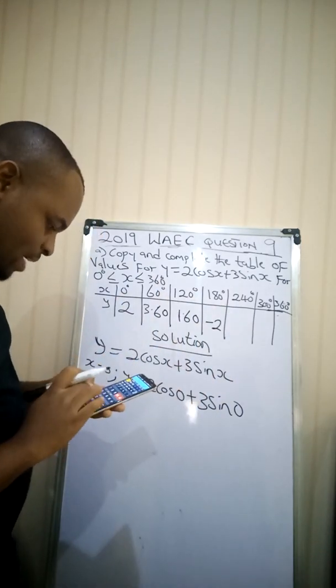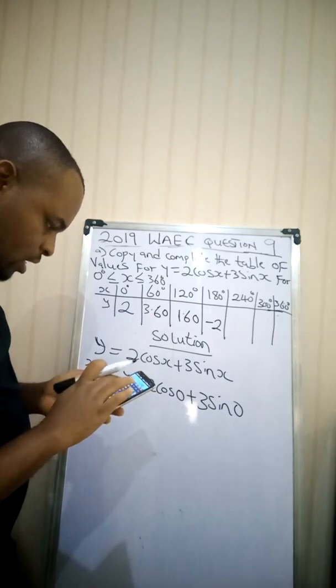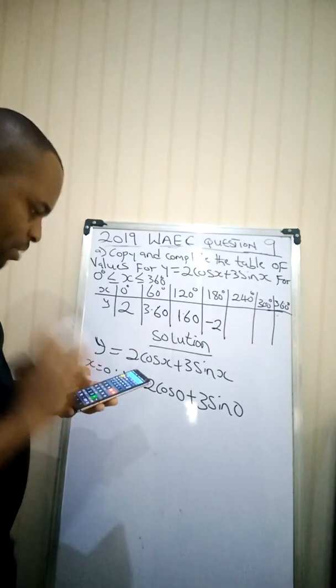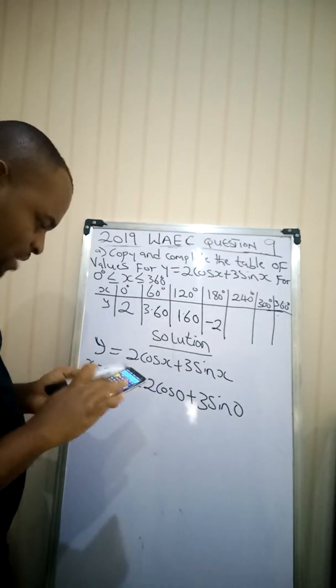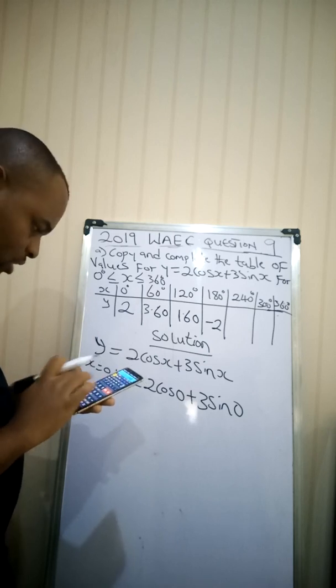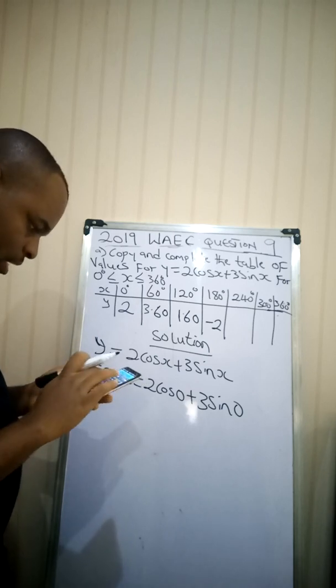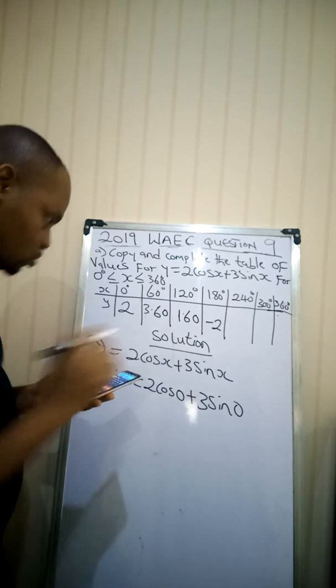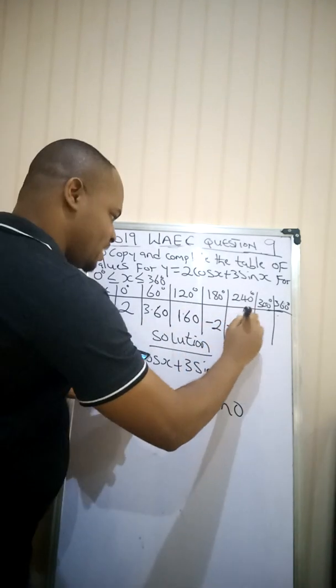Then you do for 240. 2 multiplied by cos(240) plus, you open a bracket, 3 multiplied by sin(240). Close the brackets. Equal to. I have negative 3 decimal 5.